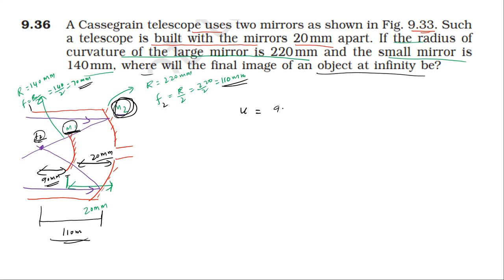For the image, we need to find where the final image will be. Using the mirror formula: 1 over v plus 1 over u equals 1 over f. So 1 over v equals 1 over f minus 1 over u. The object distance u is 90 millimeters.